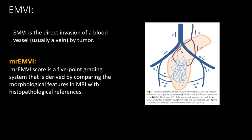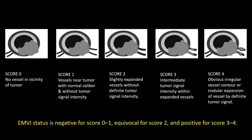EMVI is the direct invasion of a blood vessel — usually a vein — by the tumor. It is a 5-point grading system derived by comparing morphological features on MRI with histopathological findings. Score 0 — no vessel in the vicinity of the tumor. Score 1 — vessels present with normal caliber and no tumor signal intensity. Score 2 — slightly expanded vessels without tumor signal intensity. Score 3 — intermediate tumor signal intensity with expanded vessels. Score 4 — obvious irregular vessel contour or nodular expansion by definite tumor signal. EMVI status is negative for scores 0 and 1, equivocal for score 2, and positive for scores 3 and 4.